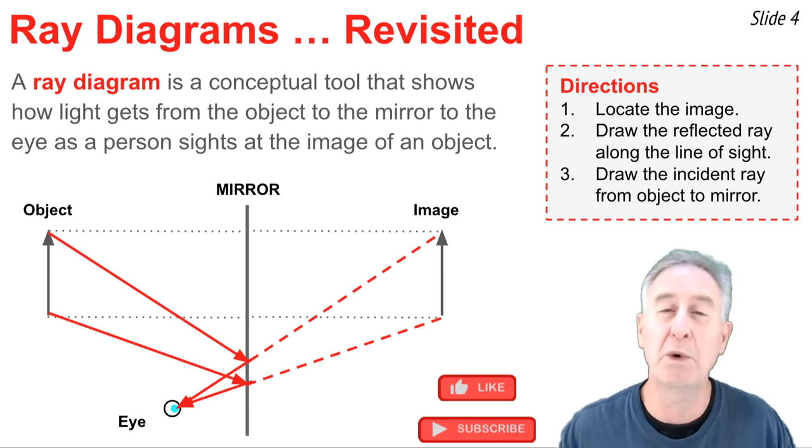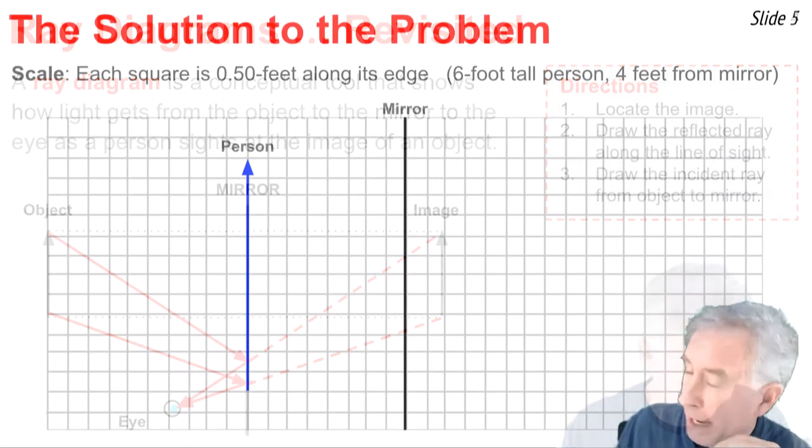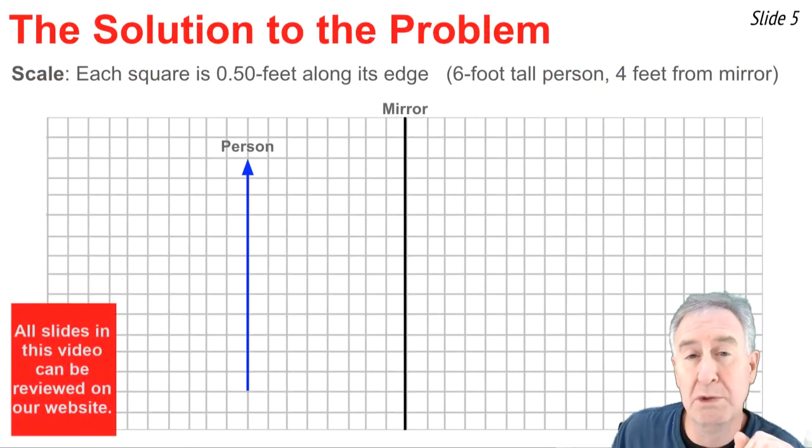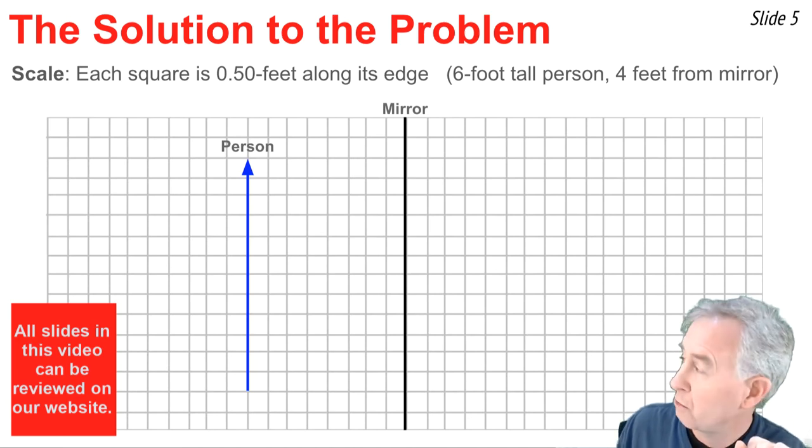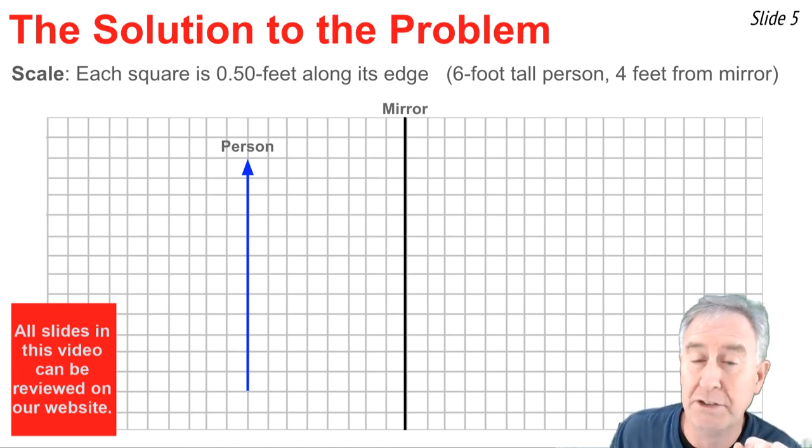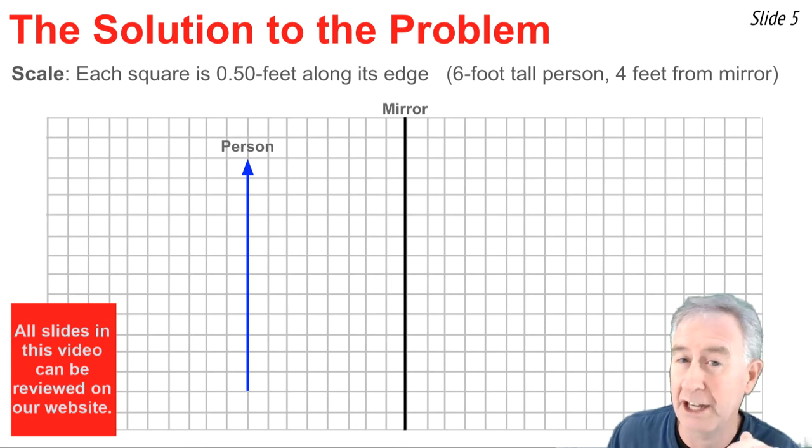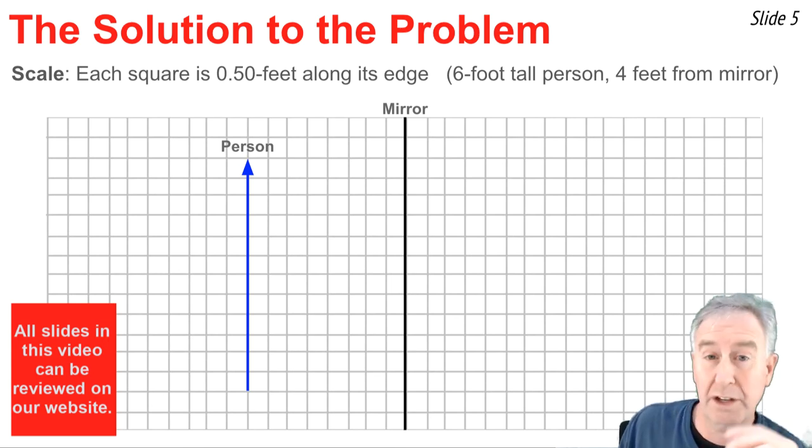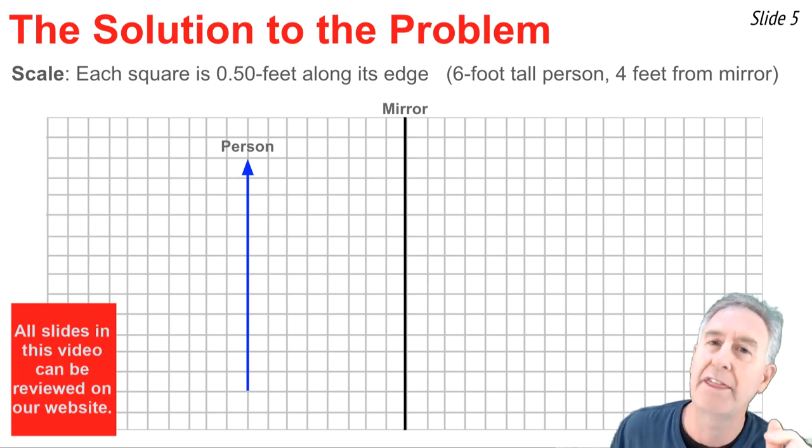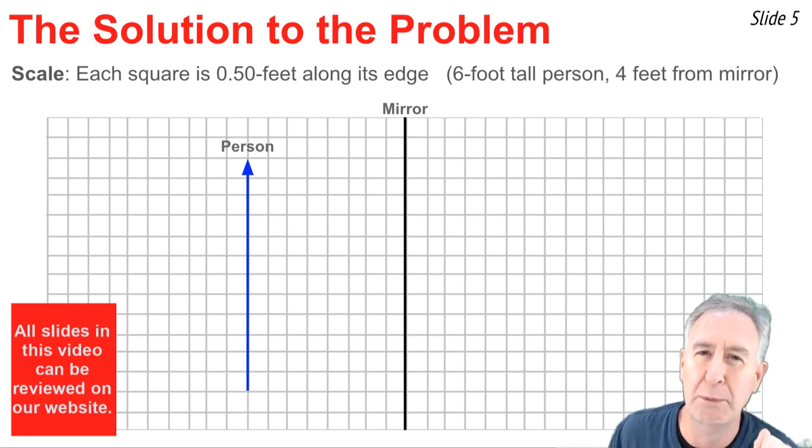and it's a ray diagram that we'll be using to answer the six-foot man problem. This background grid consists of squares which measure 0.5 feet along their edge. The person is represented by an arrow and is eight squares from the mirror, putting the person at a distance from the mirror of four feet. And since the person is 12 squares tall, that makes this a six-foot tall person.